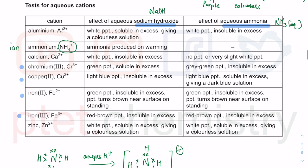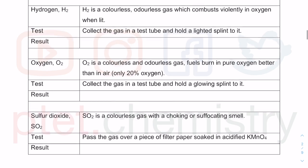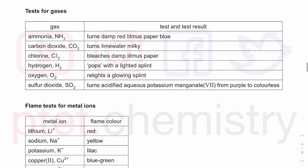Always consider what happens in excess as well. When describing the test, you cannot just say 'add sodium hydroxide and get white precipitate' — you must also describe what happens when excess reagent is added. These practical observations should be something you can fill in your table independently. For the gas tests: ammonia turns red litmus paper blue because it is alkaline or basic.